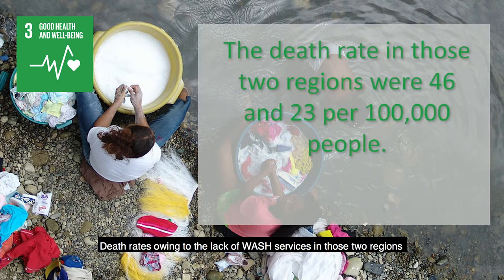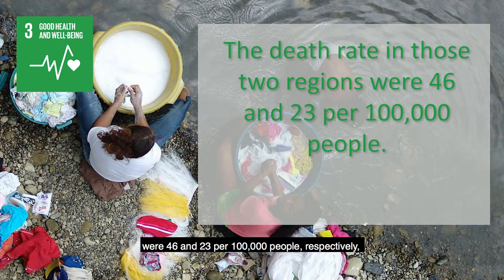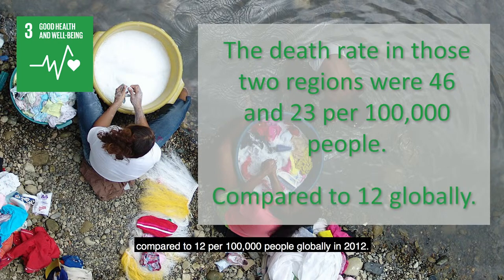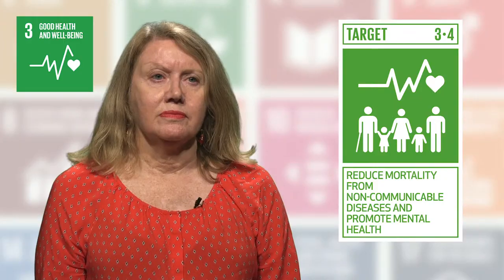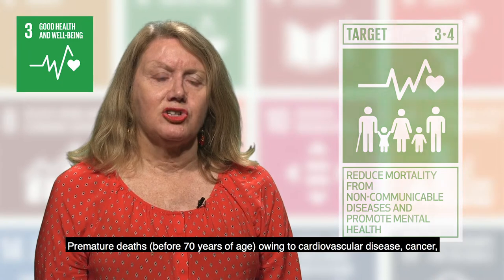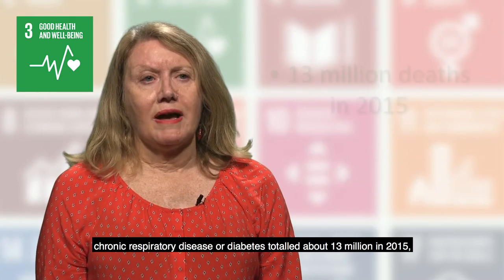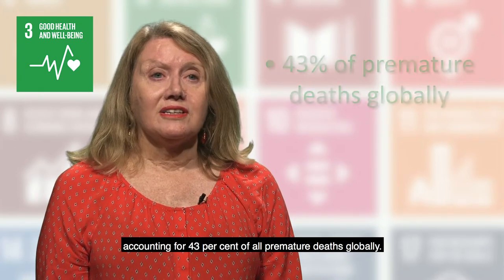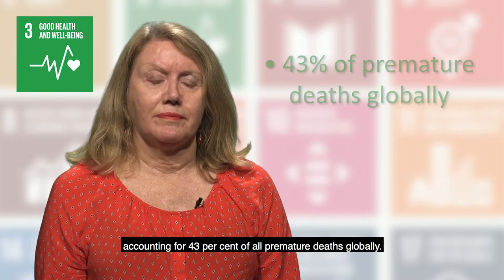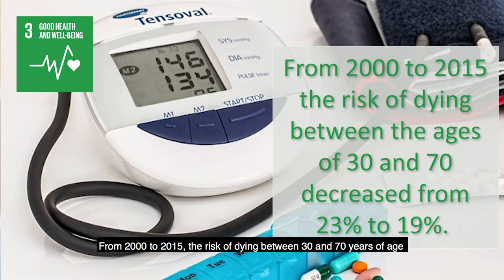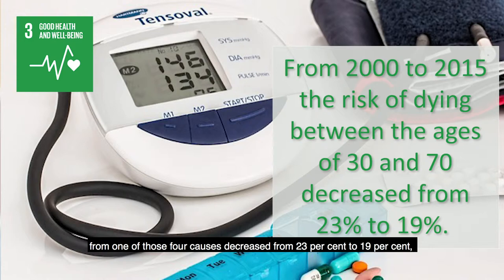Death rates owing to the lack of WASH services in those two regions were 46 and 23 per 100,000 people respectively, compared to 12 per 100,000 people globally in 2012. Premature deaths before 70 years of age owing to cardiovascular disease, cancer, chronic respiratory disease or diabetes totalled about 13 million in 2015, accounting for 43% of all premature deaths globally. From 2000 to 2015, the risk of dying between 30 and 70 years of age from one of those four causes decreased from 23% to 19%, falling short of the rate required to meet the 2030 target of a one-third reduction.